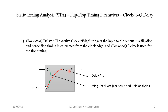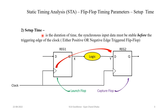How this timing parameter is used while doing timing analysis will be covered in the next chapter. The second important parameter of a flip-flop is setup time. Setup time is nothing but a duration of time during which the synchronous input data present at the D input of the flip-flop must be stable before the trigger edge of the clock. Whenever there is an active trigger edge at the clock, prior to that, during a specific timing window, the data at the D input should be stable — it should not be changing.